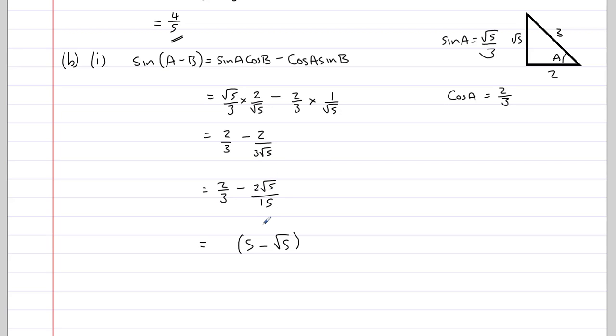We've already got a root 5 here. What do we need to factor out? 2 fifteenths, and that's easy to check. If I do 2 fifteenths times 5, I end up with 10 over 15, which is 2 thirds, so that works.